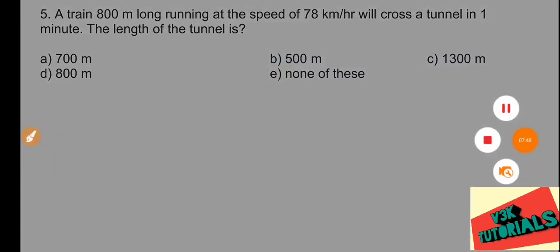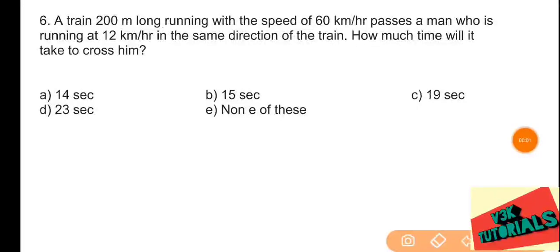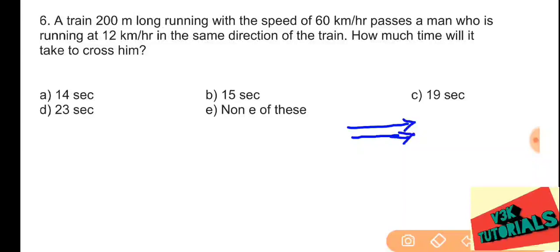Problem number six: a train 200 meters long running at 60 kilometers per hour passes a man who is running at 12 kilometers per hour in the same direction. How much time will it take to cross him? Since they are moving in the same direction, we use relative speed: 60 minus 12 equals 48 kilometers per hour.